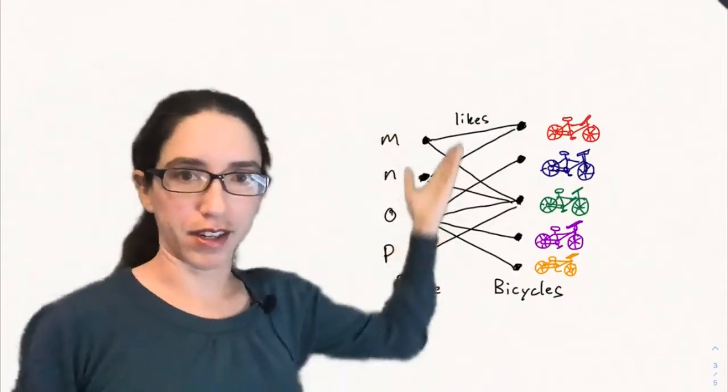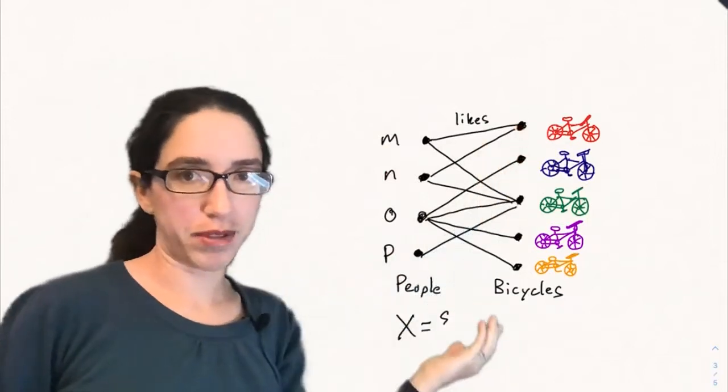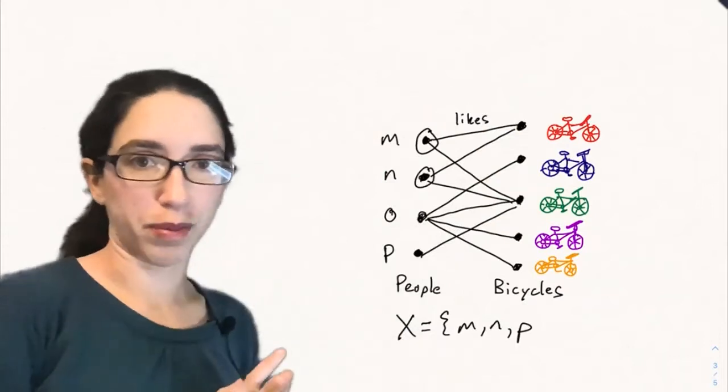For every subset X here of people, we want to check that the neighborhood of that subset is bigger than the set that we started with over here. That's the condition for Hall's marriage theorem.